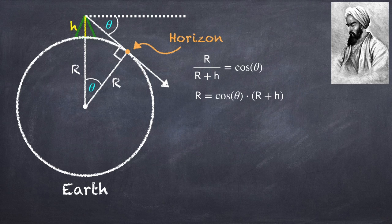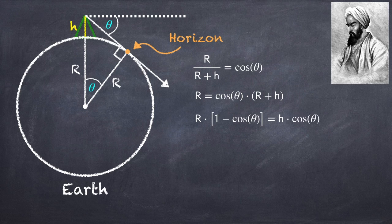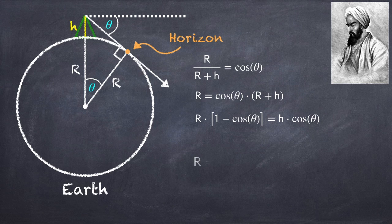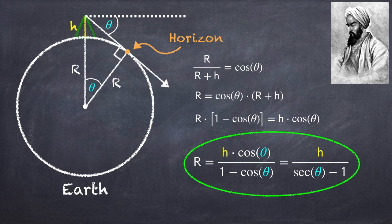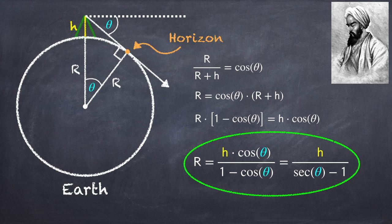And divide by 1 minus cosine theta to get that the radius of the earth is h cosine theta divided by 1 minus cosine theta, which I can rewrite as h divided by secant theta minus 1.